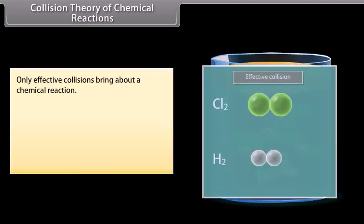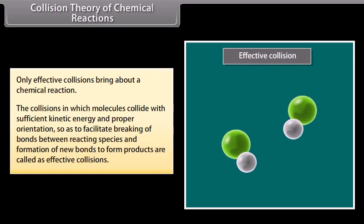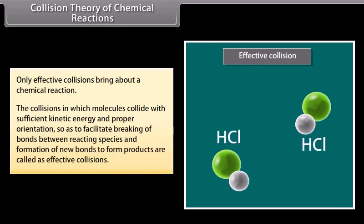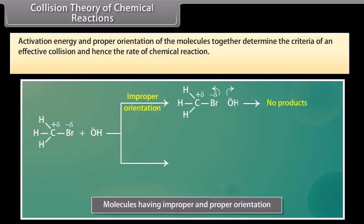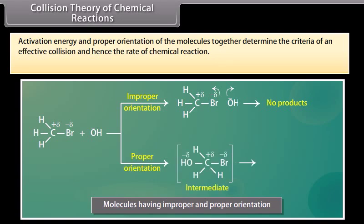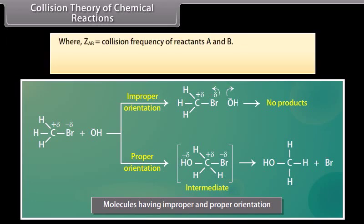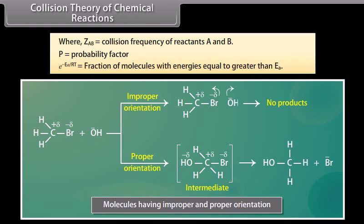Only effective collisions bring about a chemical reaction. The collisions in which molecules collide with sufficient kinetic energy and proper orientation, so as to facilitate breaking of bonds between reacting species and formation of new bonds to form products, are called effective collisions. Activation energy and proper orientation of the molecules together determine the criteria of an effective collision and hence the rate of chemical reaction. Rate = P·Z_AB·e^(−Ea/RT), where Z_AB is the collision frequency of reactants A and B, P is the probability factor, and e^(−Ea/RT) is the fraction of molecules with energies equal to or greater than Ea.